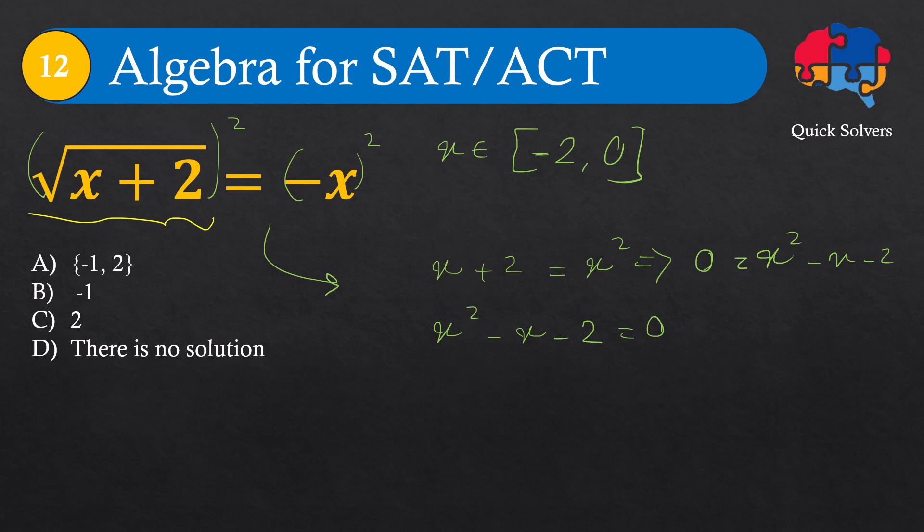Now there are two ways we can find x. The simplest way is to factor this as x plus 1 times x minus 2 equals 0. From this, we can conclude that x is either minus 1 or x is 2, or maybe both.